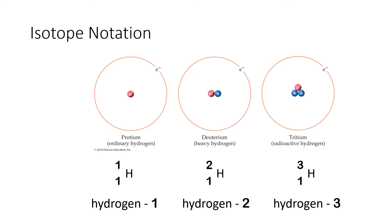Down below each isotope I've shown two versions of the isotope notation. The first one has the symbol ¹₁H and the name hydrogen-1. The second isotope has the symbol ²₁H or hydrogen-2, and the third one has the symbol ³₁H or hydrogen-3.